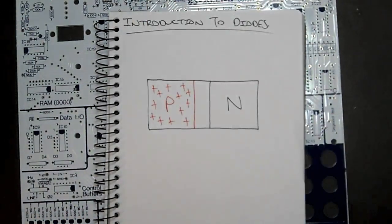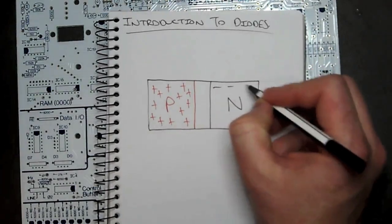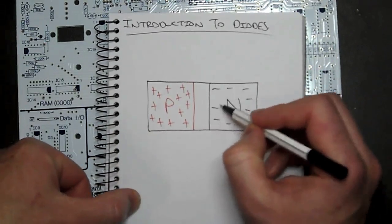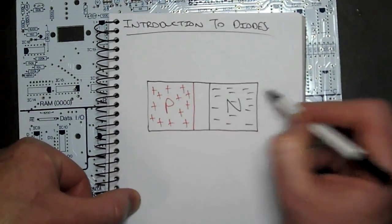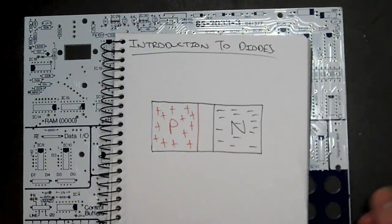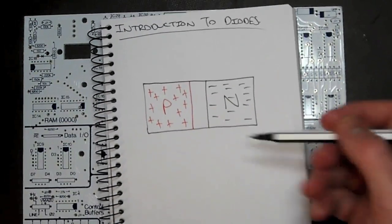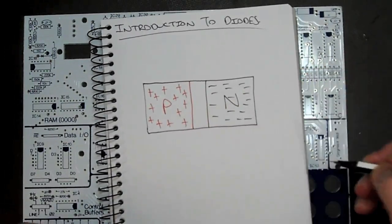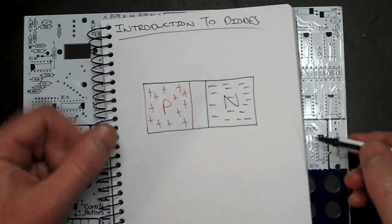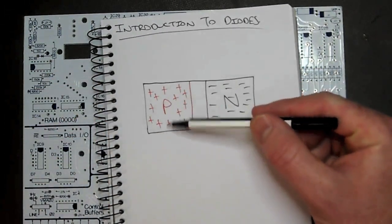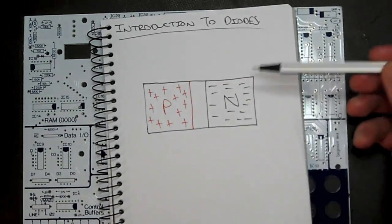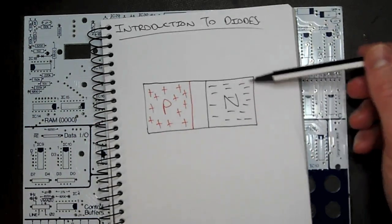The N-type is doped with such a material so as to give us excess electrons — a whole heap of electrons in our N-type material. We call these majority carriers. The majority carriers in the P-type are holes, or positive ions. The majority carriers in the N-type are the electrons.